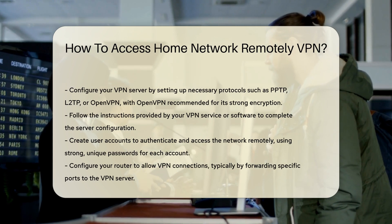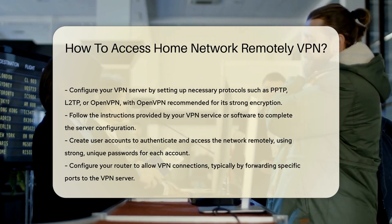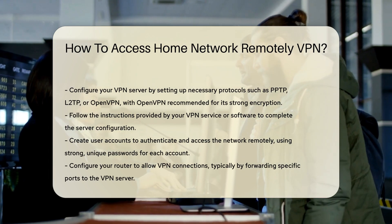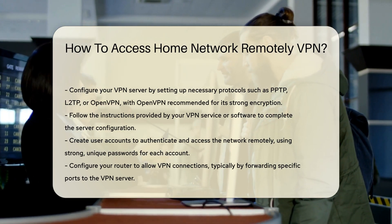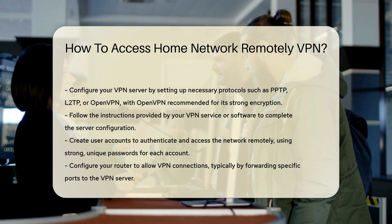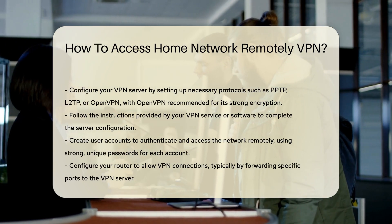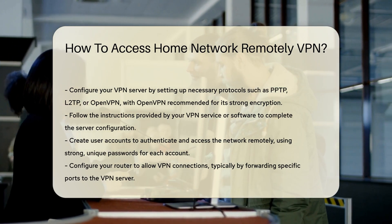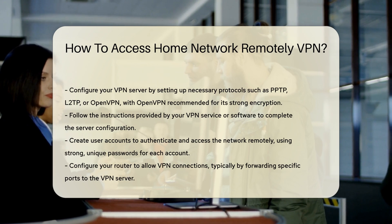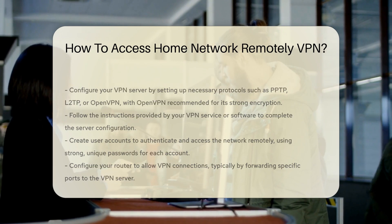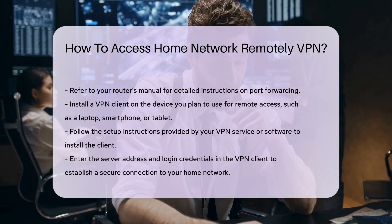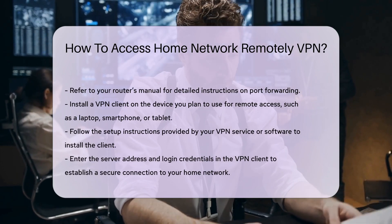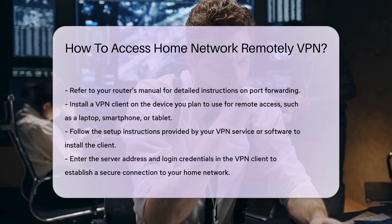Once your VPN server is configured, you need to create user accounts. These accounts will allow you to authenticate and access the network remotely. Ensure that you use strong, unique passwords for each account to enhance security. After setting up user accounts, configure your router to allow VPN connections — this typically involves forwarding specific ports to the VPN server. Refer to your router's manual for detailed instructions on port forwarding.